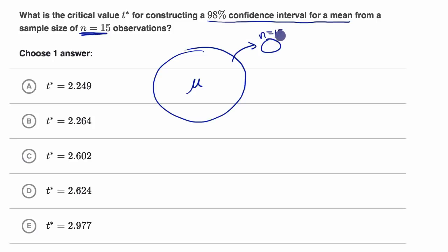So n is equal to 15. And from that sample, we can calculate a sample mean. But we also want to construct a 98% confidence interval about that sample mean.